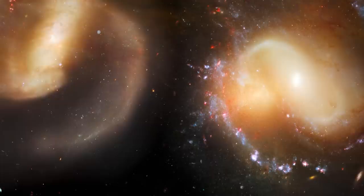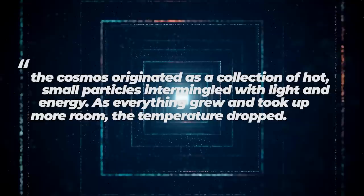In essence, if everything was moving away, it signified that everything was once closer together. According to the Big Bang theory, the cosmos originated as a collection of hot, small particles intermingled with light and energy. As everything grew and took up more room, the temperature dropped. The minuscule particles clumped together to form atoms, which clumped together to form the stars and galaxies we see today.